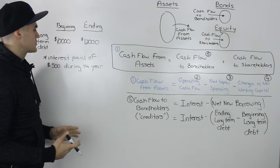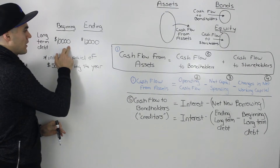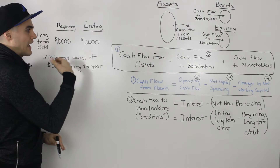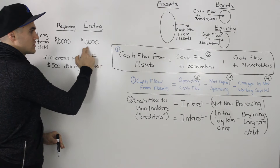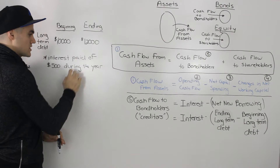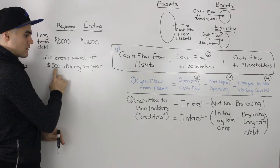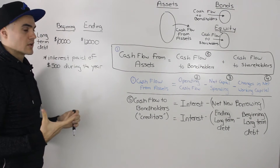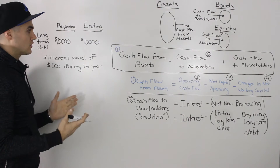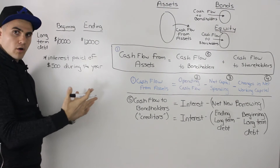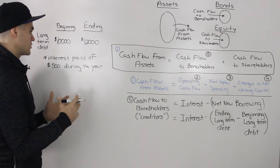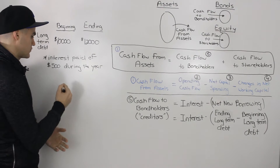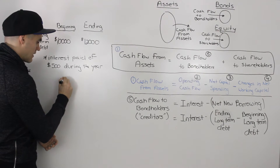Let's illustrate this through an example. Let's say that at the beginning of the year, on a company's balance sheet, the long-term debt was $10,000. At the end of the year, the long-term debt rose to $12,000. There was also interest paid of $500 during the year. From the perspective of the bondholder, the interest the company pays you is a positive cash flow — you're receiving that $500.